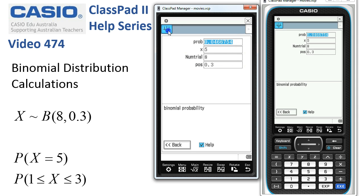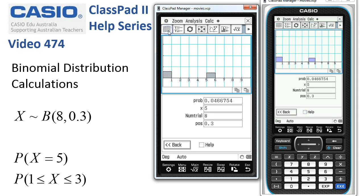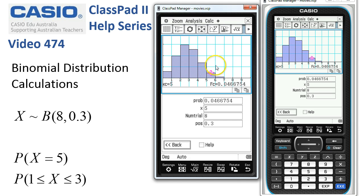What's nice is to tap onto the graph icon and we get a look at the distribution. This is the probability that we've just calculated. To get a 5 is 0.046, and you can see...